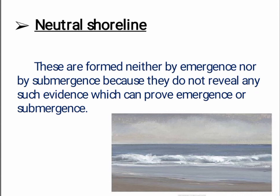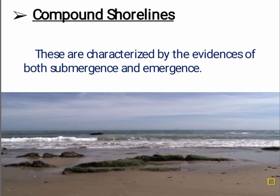The next is the neutral shoreline. These are formed neither by emergence nor by submergence, as they do not reveal any evidence which can prove emergence or submergence. And the next is the compound shoreline, which is characterized by evidence of both submergence and emergence.